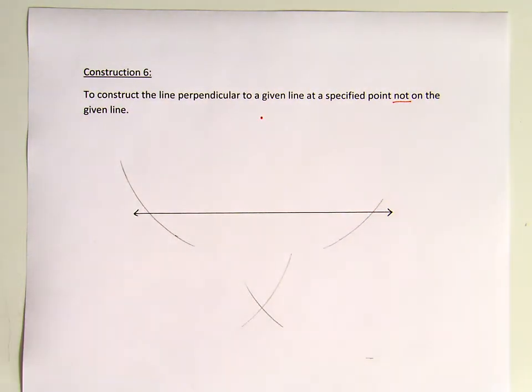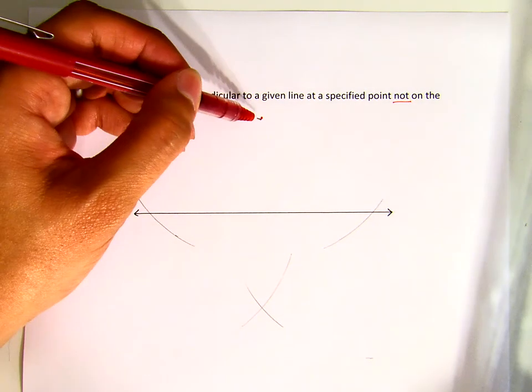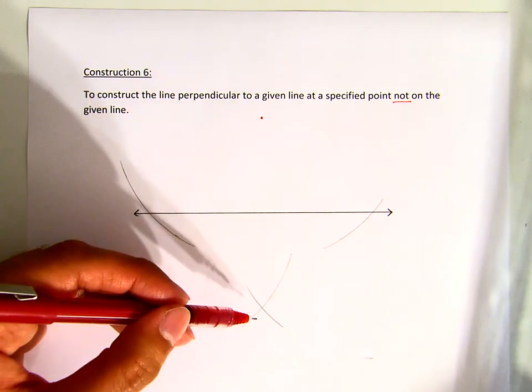Now I am pretty much done. All I need to do is pull the line from this point to that intersection there.